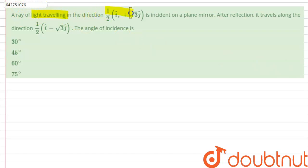traveling in the direction (1/2)i cap plus root 3 j cap is incident on a plane mirror. After reflection, it travels along the direction (1/2)i cap minus root 3 j cap. The angle of